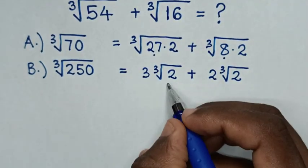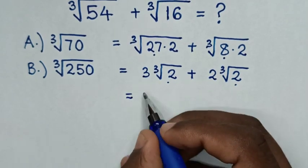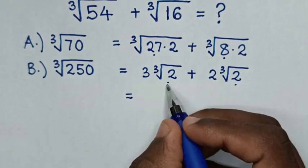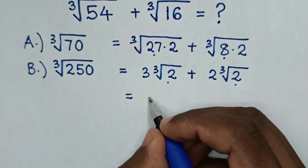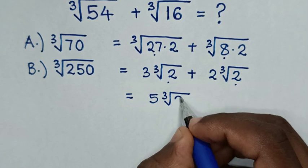Then cube root of 2 is common, so it will be equal to 3 cube root of 2 plus 2 cube root of 2, which is 5 cube root of 2.